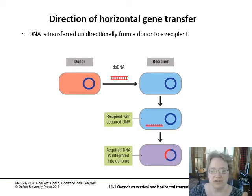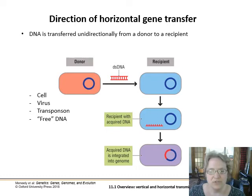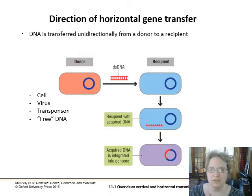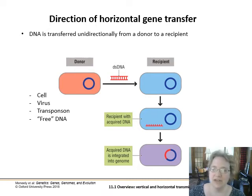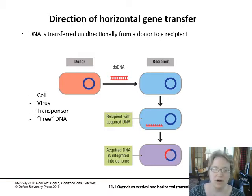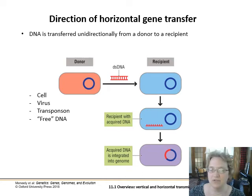Horizontal gene transfer is unidirectional — it doesn't have to be back and forth, it's a one-way transfer. The donor could be a cell, a virus, a transposon within viral DNA, or free DNA floating in the environment, although that's pretty rare. Some strains of bacteria do acquire free-floating DNA in case it might give them an advantage. As with any DNA sequence, if something is disadvantageous to the cell, it will be at a selective disadvantage; if it's advantageous, it will be more likely to stick around in further generations.